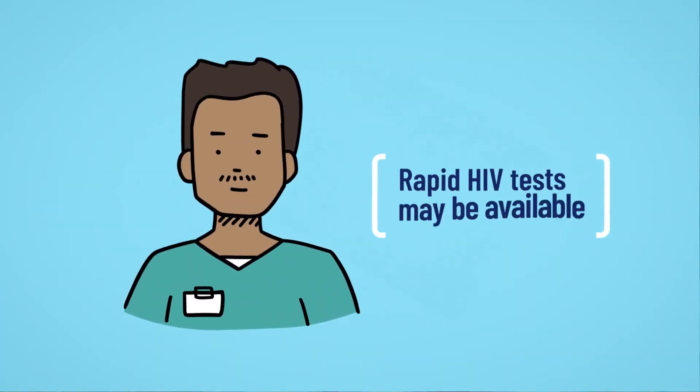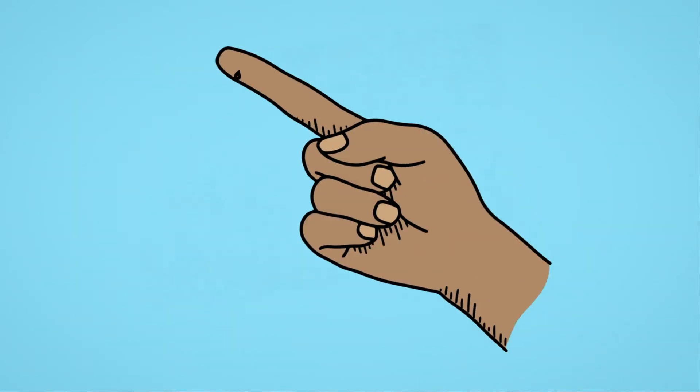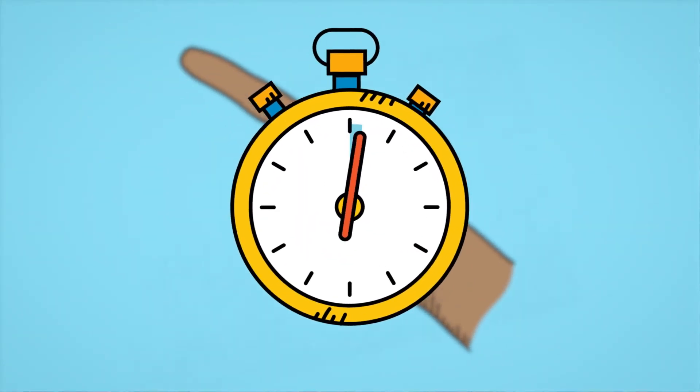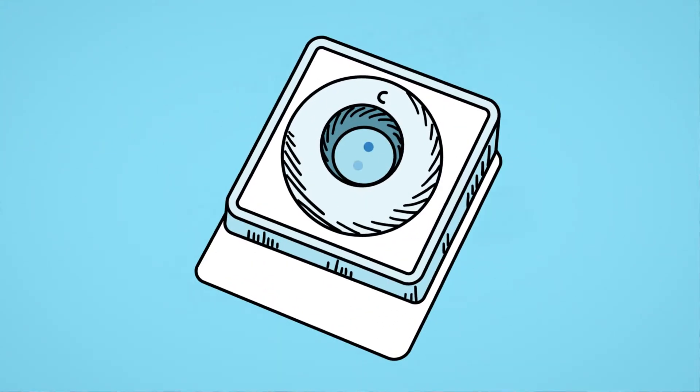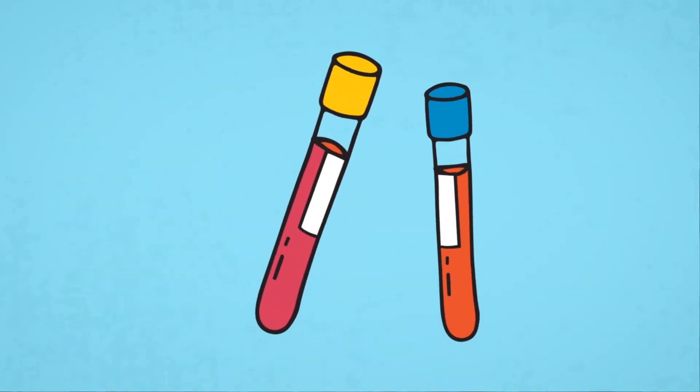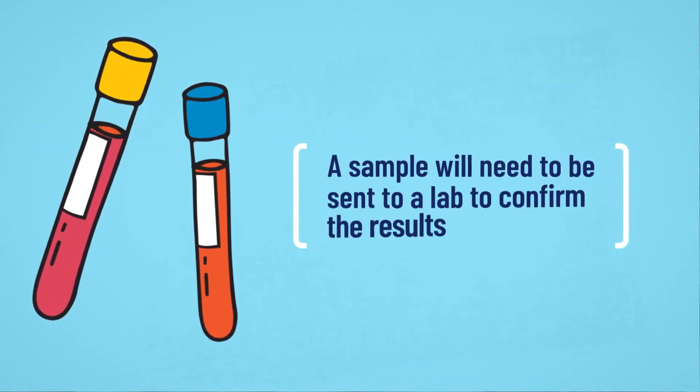In some regions, it is possible to get a rapid HIV test from a health care provider or community worker. A drop of blood will be used to test for HIV, and you'll be given your result within minutes. If the test indicates that you may have HIV, then you'll need to have blood taken from your arm and sent to a lab to confirm you have HIV.